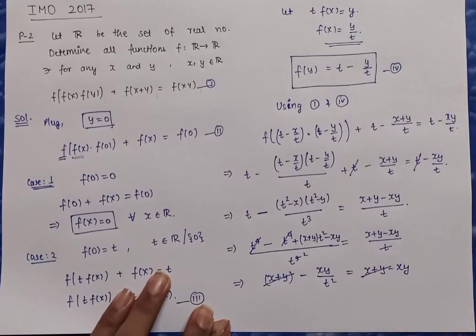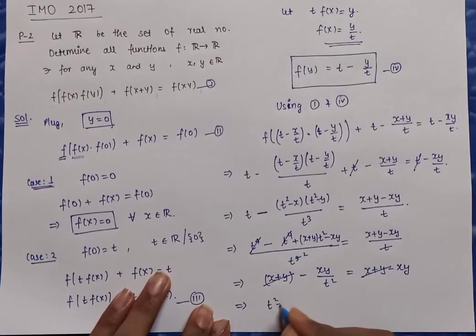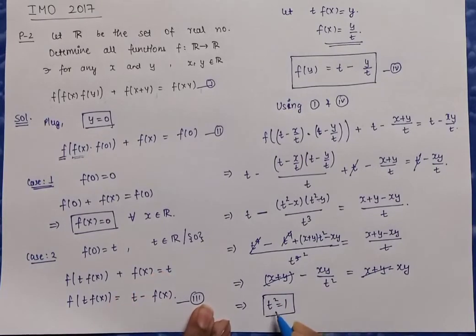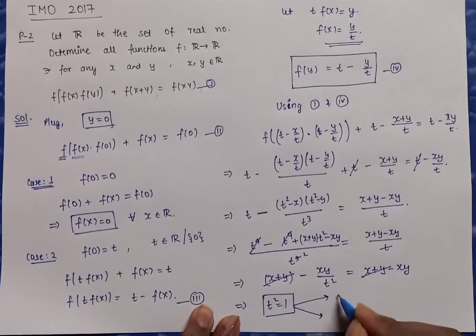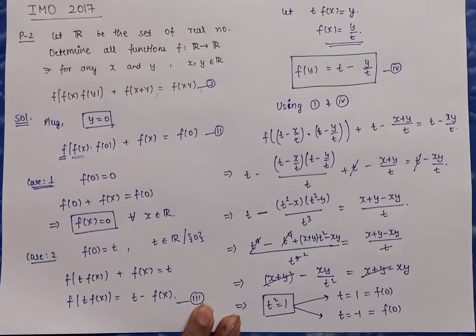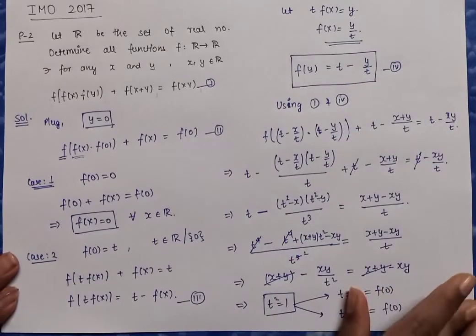After simplifying, the x+y terms cancel and the xy terms cancel, leaving t² = 1. So we have two possibilities: either t = 1 or t = −1, which are the two possible values of f(0). For each of these values of t, we now define what the functions are. Let's take it to the next page.